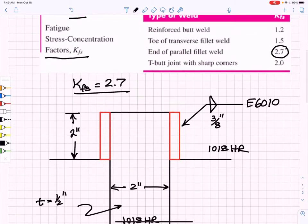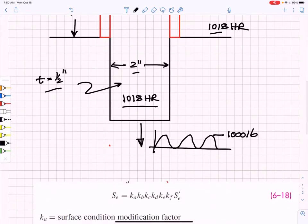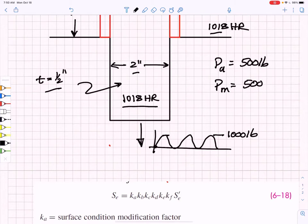We will evaluate a simple problem: a 1018 hot rolled steel bar, 2 inches wide, 1.5 inch thick, welded through two 3/8 inch fillet welds using an E60-10 weldment to a 1018 hot rolled backplate. We are going to apply a cyclic load that varies from 0 to 1,000 pounds to this plate. The load amplitude is going to be 500 pounds, and the load mean is also going to be 500 pounds.